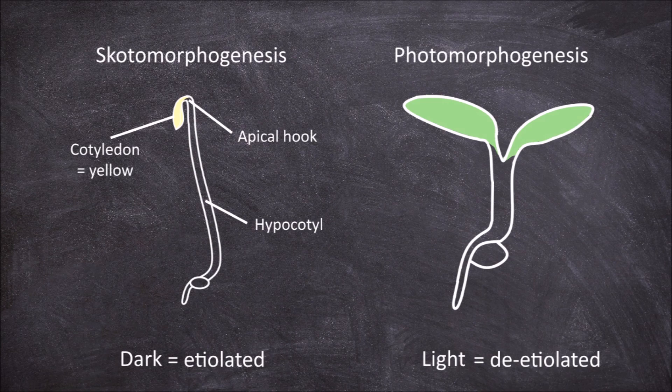These seedlings are characterized by a short, thick hypocotyl and lack of an apical hook. The cotyledons have opened up and become green as chloroplast development has occurred in response to the light.